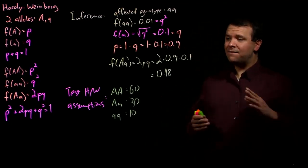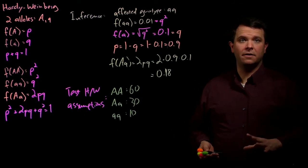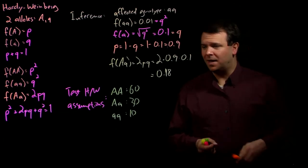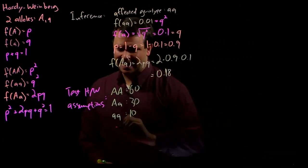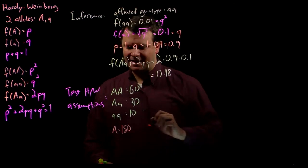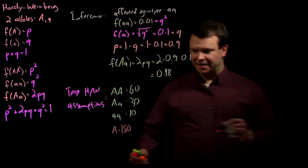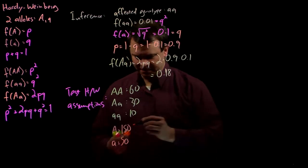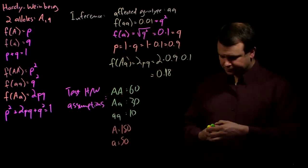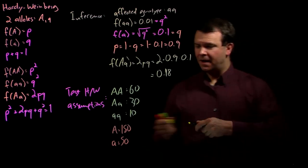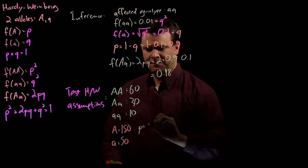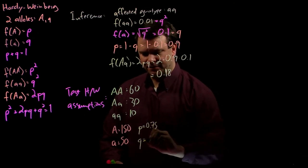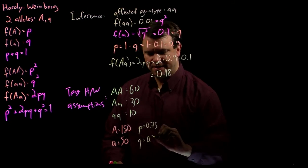Well, if this population is in Hardy-Weinberg equilibrium, what proportions would I expect? Well, it turns out that there are 150 big A alleles and there are 50 little a alleles. And so, the frequency of big A, P, is 0.75, and the frequency of little a, q, is 0.25.